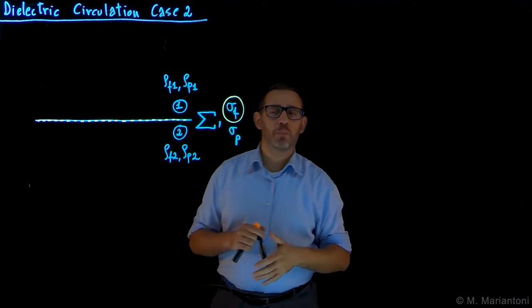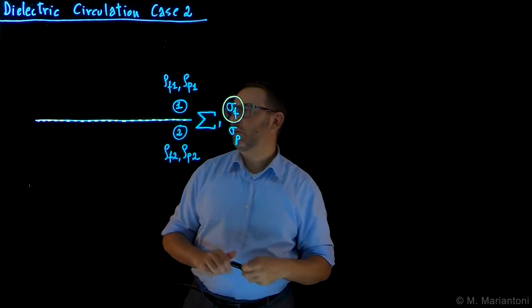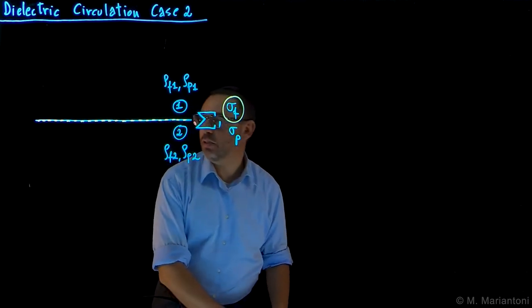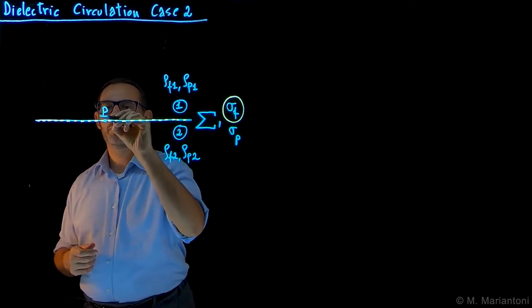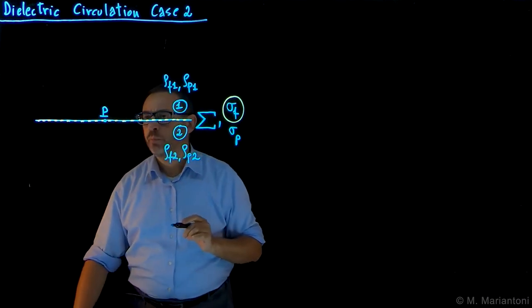That p doesn't have to be uniform, so we could have rho p1 and rho p2. We want to study what happens in the vicinity of a point capital P somewhere here on this interface. Case 2, as always. This is capital P, the point of observation, which has nothing to do with the polarization vector intensity.